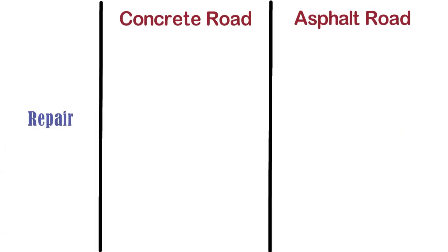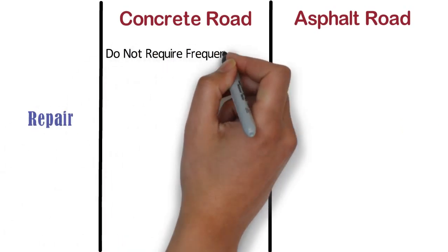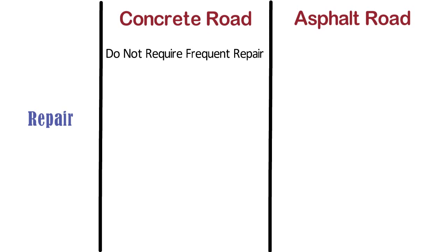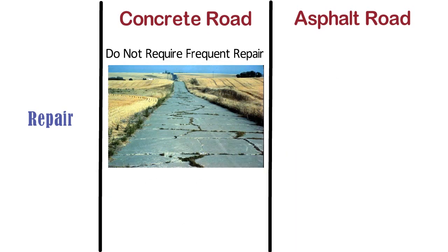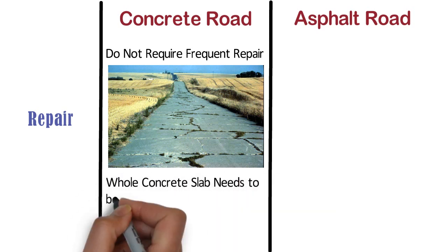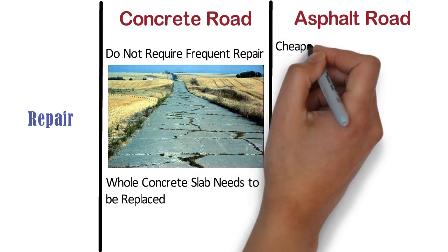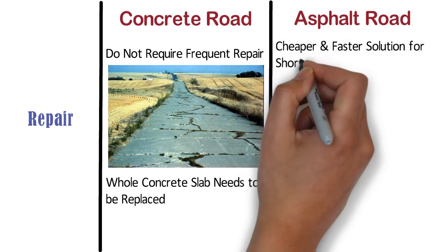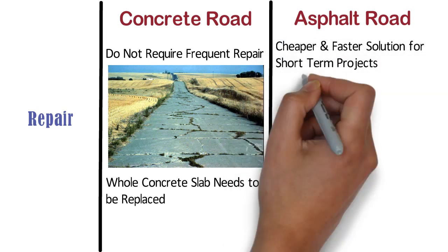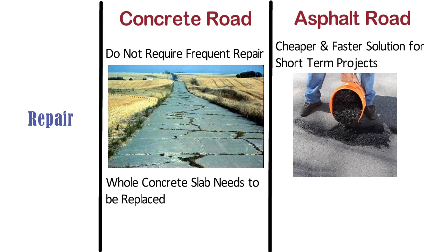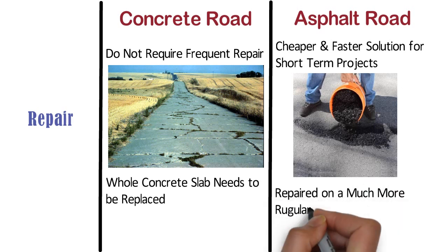Repair. Concrete roads do not require frequent repair or patching work like asphalt roads. But if the concrete road breaks, the whole concrete slab needs to be replaced. On the other hand, asphalt is a cheaper and faster solution for short-term projects, but the repairs are sometimes just as extensive as concrete. With only a 10-year lifespan, asphalt must be re-laid or repaired on a much more regular basis.